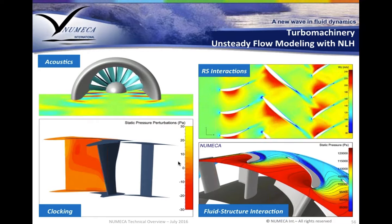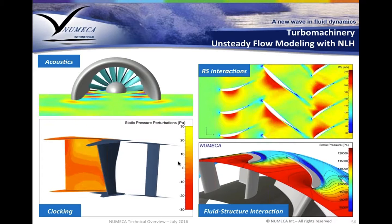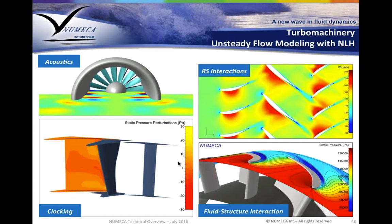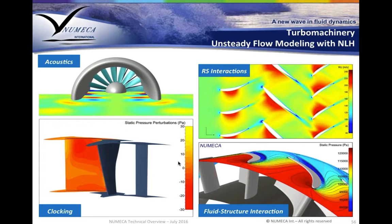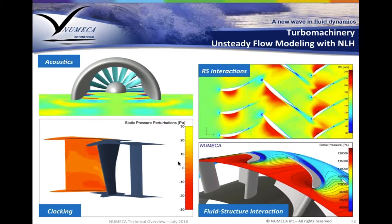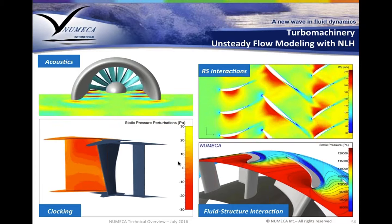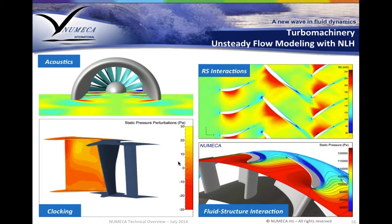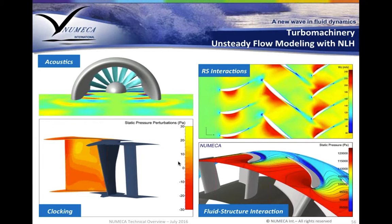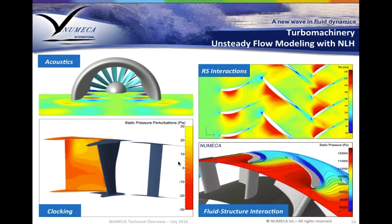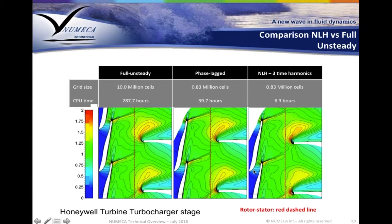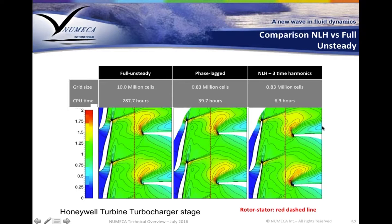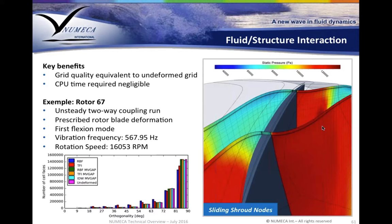A big development that helped build the reputation of Numeca is unsteady modeling. If you want to solve Turbo Machinery unsteady, one way is to mesh everything 360 degrees and progress in time and wait for convergence — that's the classical way. Another way is to solve the unsteady flow in the frequency space. That's the main idea behind the so-called NLH, which stands for Non-Linear Harmonic methodology. There are many applications using that. Here is an example: a full unsteady run takes about two weeks, while NLH takes just a few hours. We can also do fluid-structure interactions, and all of this is incorporated in Fine Turbo.